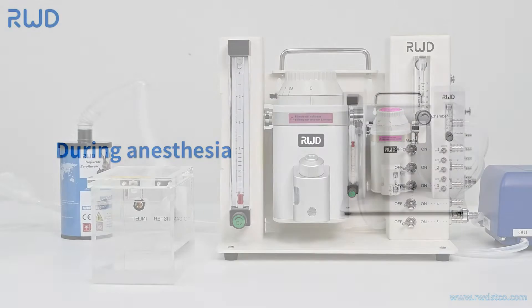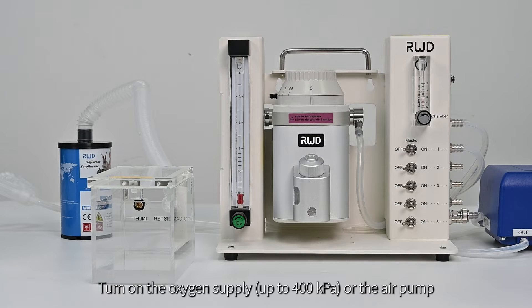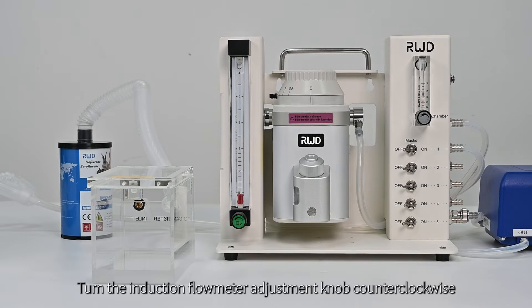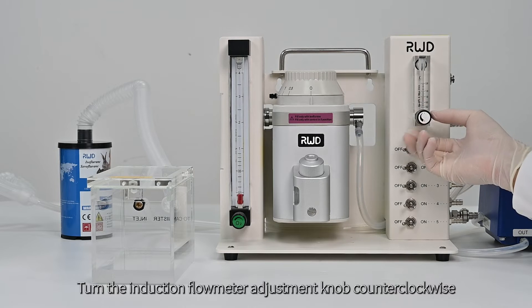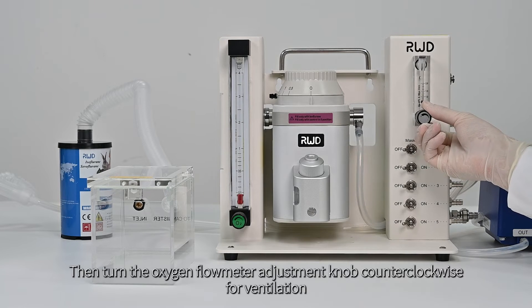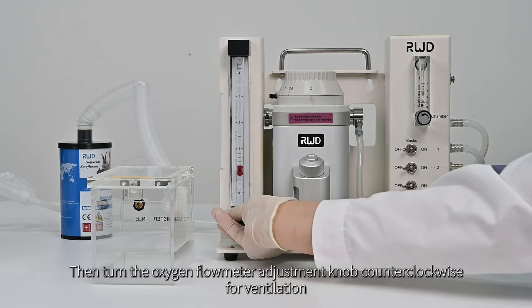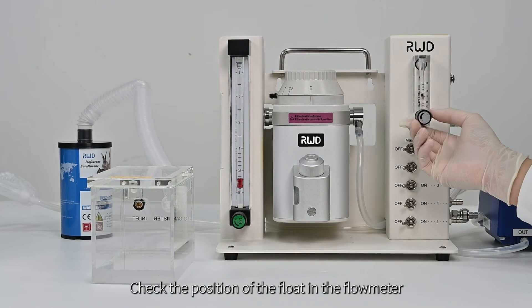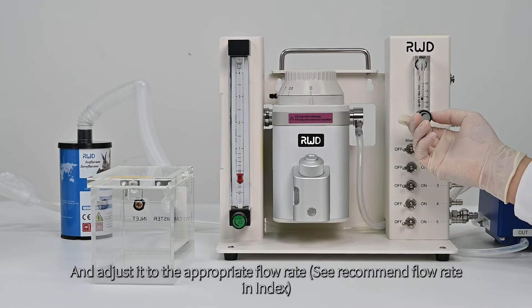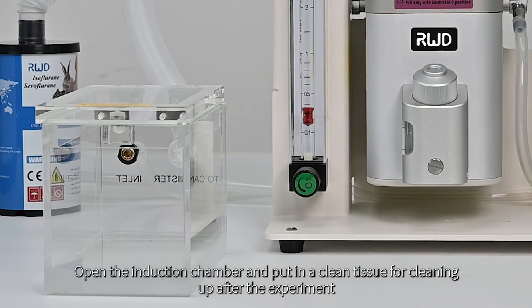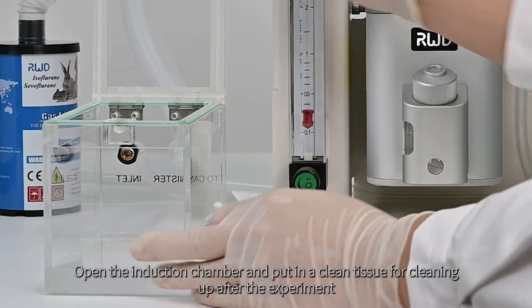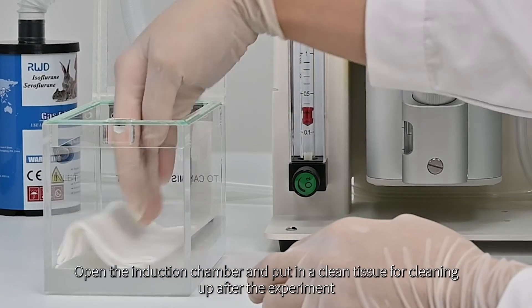During anesthesia, turn on the oxygen supply or the air pump. Turn the induction flow meter adjustment knob counterclockwise, then turn the oxygen flow meter adjustment knob counterclockwise for ventilation. Check the position of the float in the flow meter and adjust it to the appropriate flow rate. Open the induction chamber and put in a clean tissue for cleaning up after the experiment.